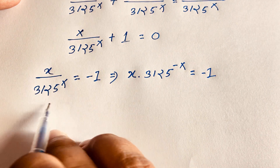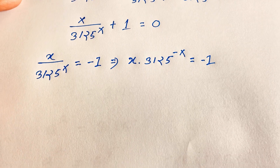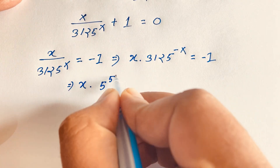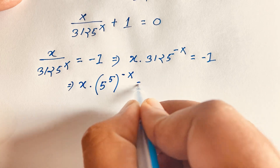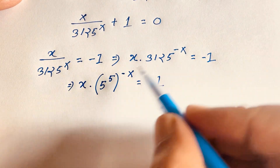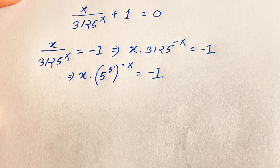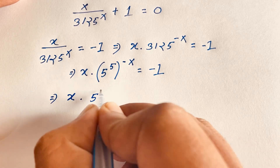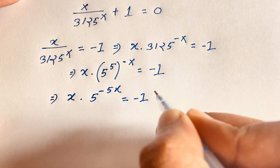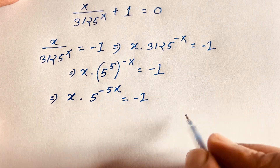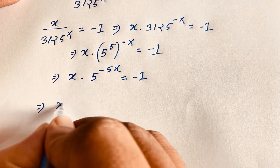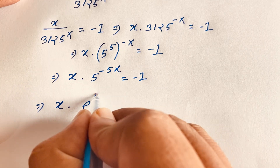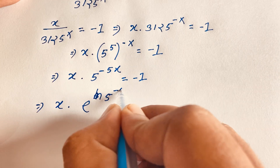Using the exponential law and the fact that 3125 equals 5 to the power 5, we get x times 5 to the power 5 to the power negative x equals negative 1, which simplifies to x times 5 to the power negative 5x equals negative 1. We then rewrite 5 to the power negative 5x as e to the power negative 5x times ln 5, using the identity e to the power ln a equals a.